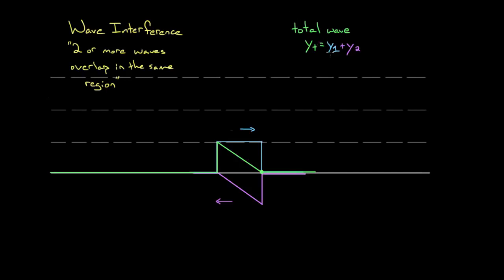This technique of adding up the values of each wave at a point is called the superposition principle — a lofty, intimidating name for something that's actually pretty simple. To find the total wave, you just add up the values of the individual waves. Recapping: wave interference is the term for when two or more waves overlap in the same region. To find the value of the total wave while they're overlapping, use the superposition principle — add up the values of the individual waves at a given point to find the value of the total wave at that point.